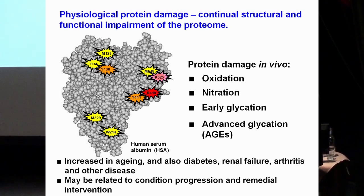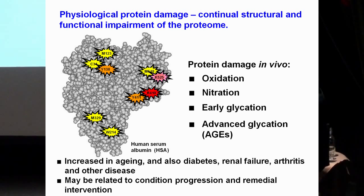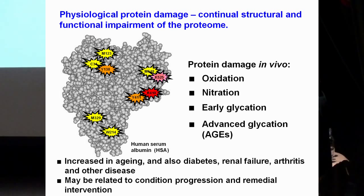There's nitration on tyrosine residues. There's what we call early glycation — the conventional adducts with glucose making fructosamine residues; in human serum albumin it's lysine 525 predominantly. And then there is advanced glycation, with many compounds representing advanced glycation end products. But the quantitatively most important one is on arginine residues — the adduct of methylglyoxal with arginine 410 in human serum albumin.